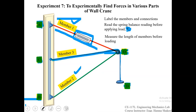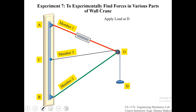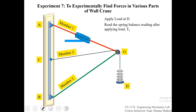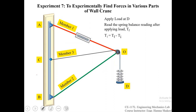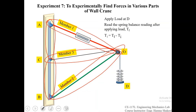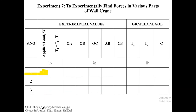Measure the lengths of the members using measuring tapes before applying any load on hanger D. Then apply some load on hanger D and read the spring balance again — this reading reflects the self-weight plus the applied load. Call this T-F, the final tension in member 1. Subtract the initial reading from the final reading to get T-1, the tension in member 1 due to the applied load. After applying the load, measure members AC, CB, OB, OC, and OA. Record these readings in a table: the applied load, tension in member 1, and lengths OA, OB, OC, AB, and CB. These are your experimental values.